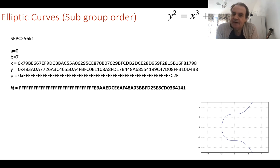We use a prime number of this value here, and we get a subgroup order of this value here.